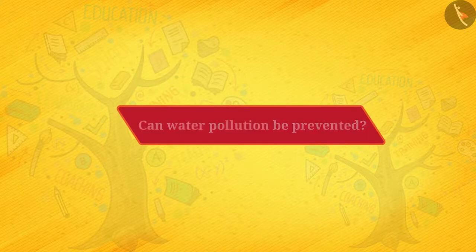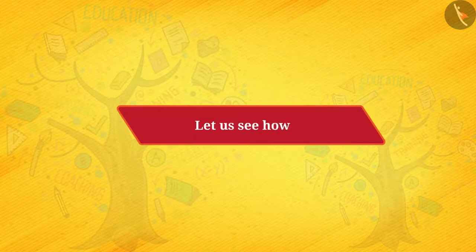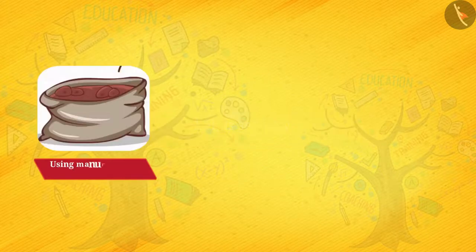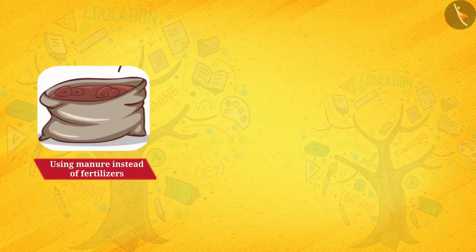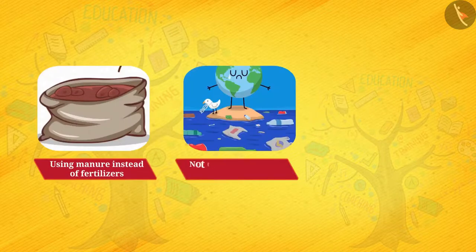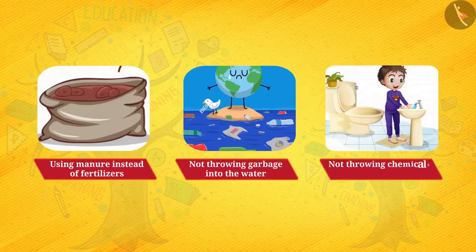Can water pollution be prevented? Yes, it can be prevented. Let us see how. Water pollution can be prevented by using manure instead of fertilizers, by not throwing garbage into the water, and by not throwing chemicals into the sink or toilet.